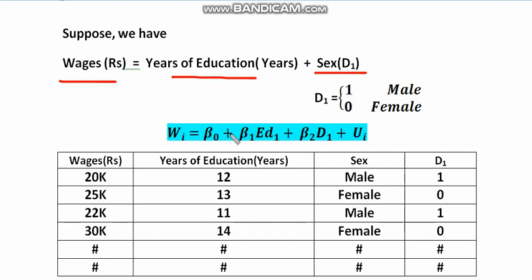Putting this into a multiple regression model: Wᵢ is wages in rupees, β₀ is your intercept term, β₁ indicates the parameter for years of education (Ed₁), β₂ indicates the parameter for your dummy variable (D₁), and Uᵢ is your disturbance term.